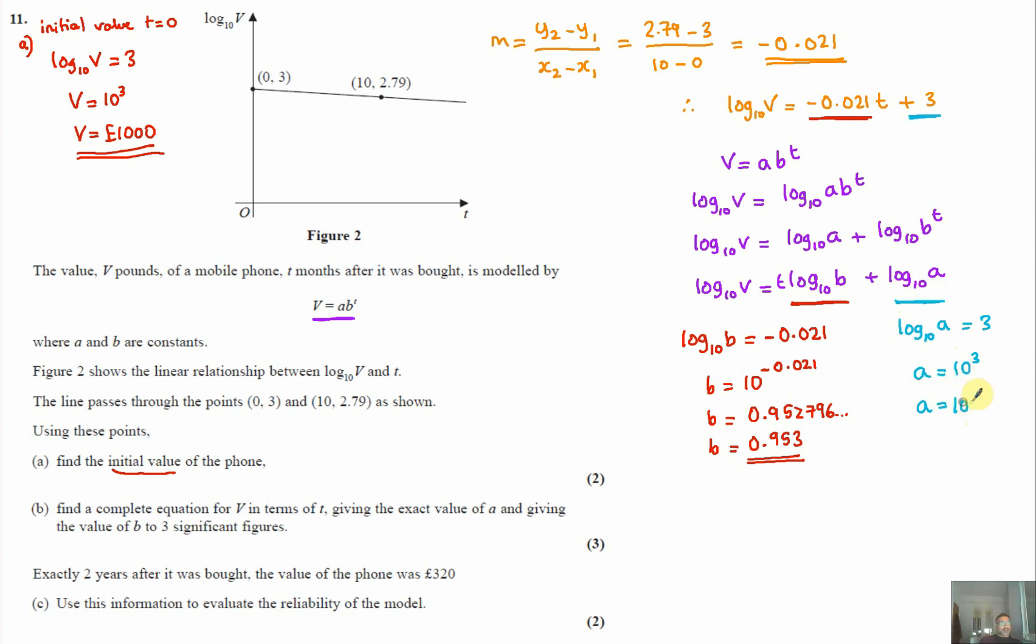Now we know what a and b are, we can rewrite our function. So V equals a, which is a thousand. And it said give an exact value for a. And that's going to be times b, 0.953 to the power of t. So we've found a complete equation for V in terms of t, giving the exact value of a and giving the value of b to three significant figures.